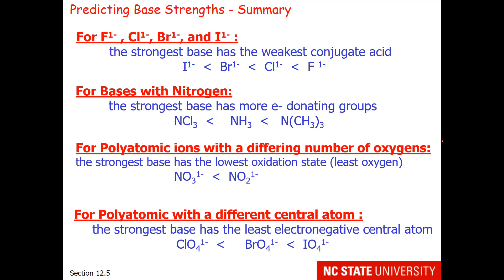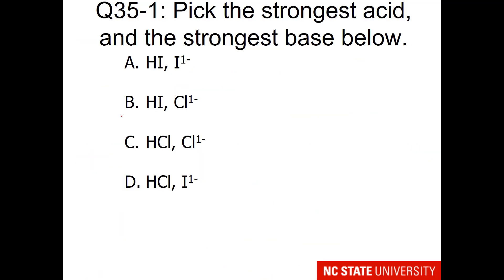And finally, if we think about polyatomic ions that act as bases, the strongest base has the least electronegative central atom. Remember that for acids, the strongest acid has the most electronegative central atom. So that would be perchloric acid. So the opposite is true for bases. The strongest base has the least electronegative central atom.